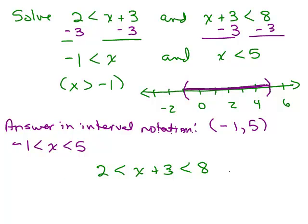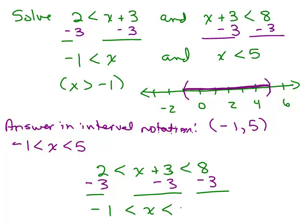Now you can solve this all in one step. Instead of solving two separate pieces, subtract 3 from all three parts to isolate x. So we have 2 minus 3 is negative 1, which is less than x, which is less than 5. You can see how much faster that was. If it's in compact form, you can go directly to the solution.